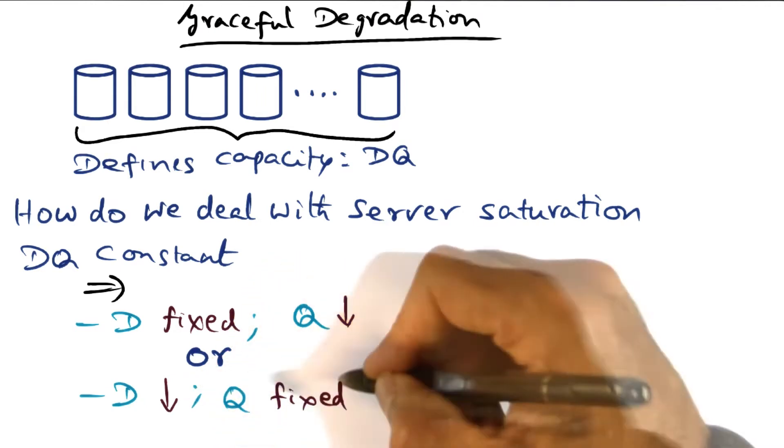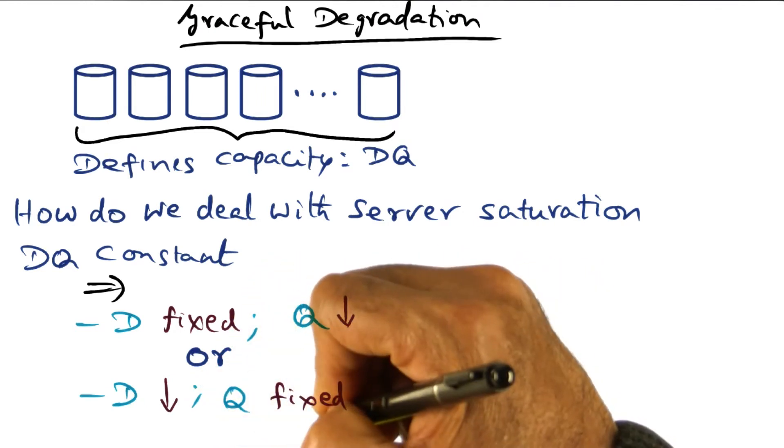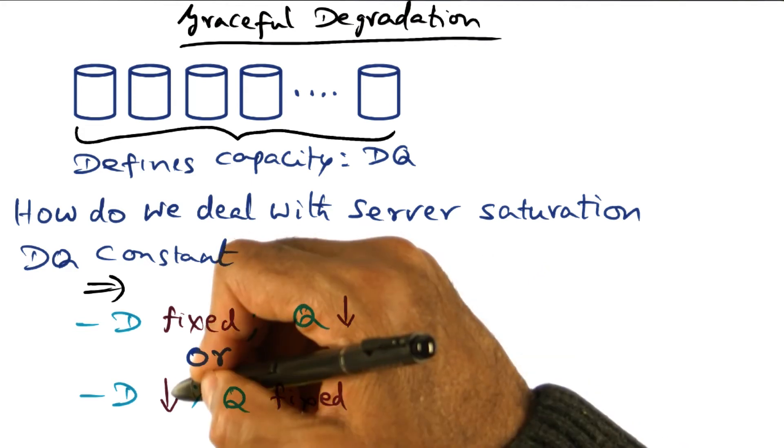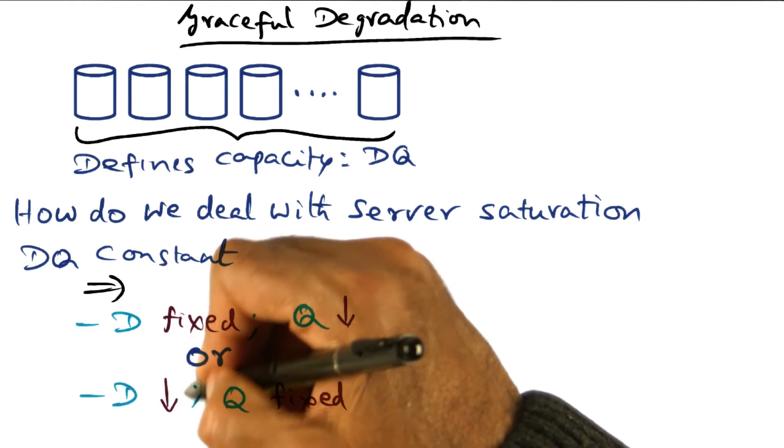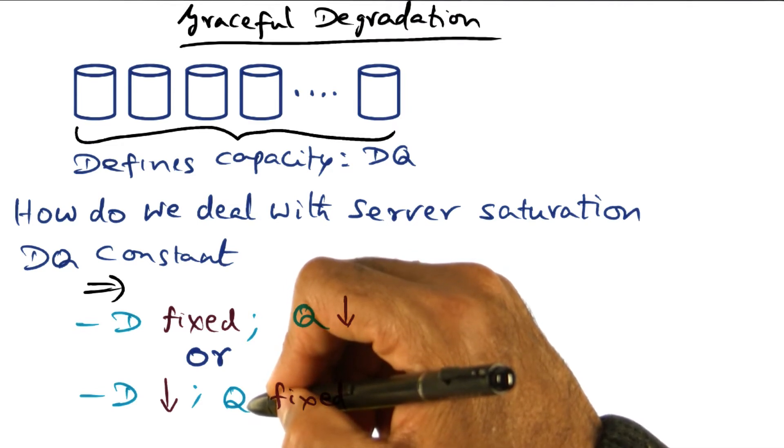The other option, of course, is to keep the volume of clients at a service, that is the yield Q, to be a constant, but decrease the harvest. So the fidelity of the results returned to the users is less than 100%, but we are keeping more of the user community happy by serving more of them.